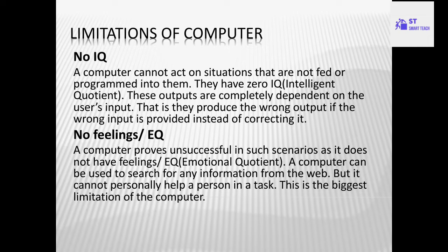The first disadvantage is no IQ — IQ means intelligent quotient. A computer is an electronic device. It cannot act on situations that are not fed or programmed into it. Whatever instructions are given by the user, those instructions are performed by the computer. Computer cannot perform its own task or its own operations. They have zero IQ. So computer is a dumb machine.